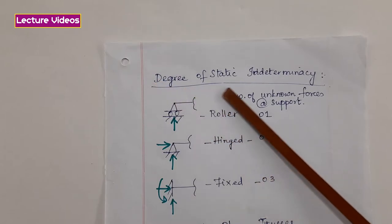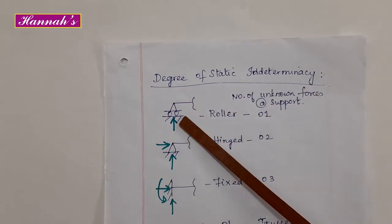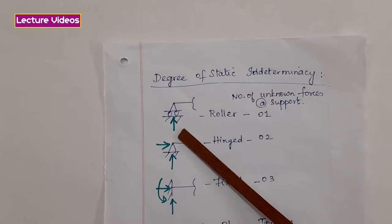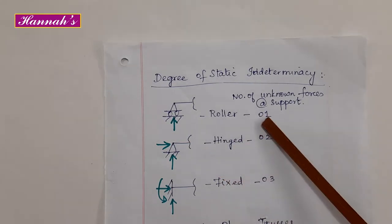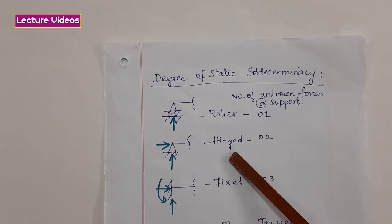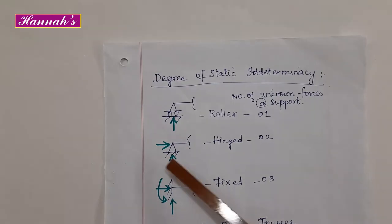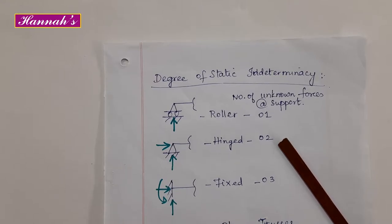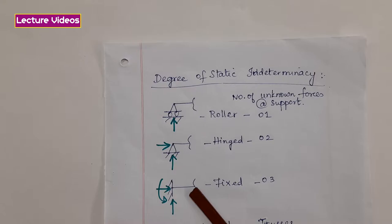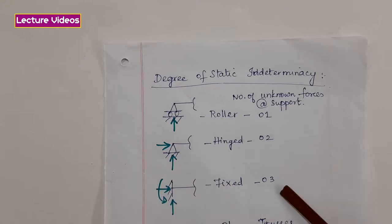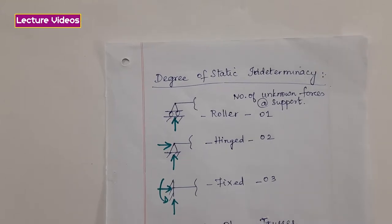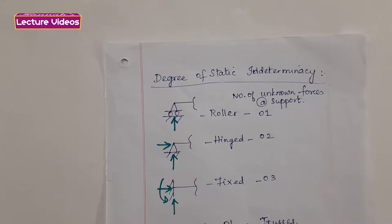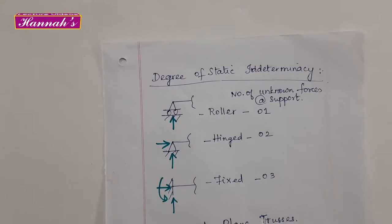In the consistent deformation method, the degree of static indeterminacy is dealt with. For a roller end, the number of unknown forces at the support is 1 — in the vertical direction. At a hinge end, there are two unknowns: one horizontal and one vertical. So the number of unknown forces at the hinge support is 2. For a fixed support, there are three unknowns: horizontal, vertical, and angular direction — so the number of unknown forces in a fixed support is 3. With this knowledge we shall see how consistent deformation method is used for analyzing statically indeterminate beams.